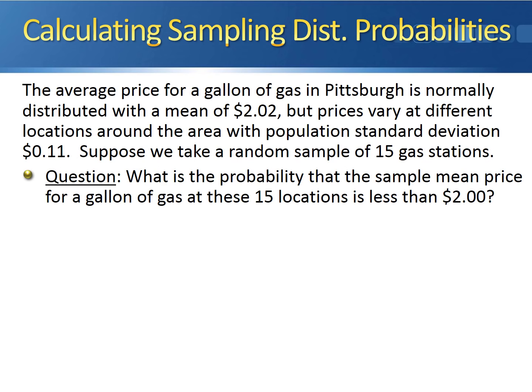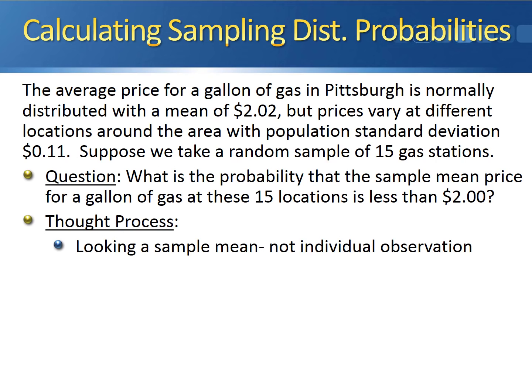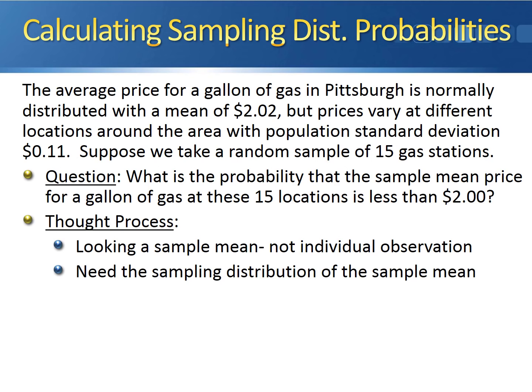Let's take a look at an example of how we calculate probabilities involving a sample mean. The average price for a gallon of gas in Pittsburgh is normally distributed with a mean of $2.02, but prices vary at different locations around the area with a population standard deviation of $0.11. Suppose we take a random sample of 15 gas stations. What is the probability that the sample mean price for a gallon of gas at these 15 selected locations is less than $2? We're looking at a sample mean, not an individual observation, so we need the sampling distribution of the sample mean in order to proceed.